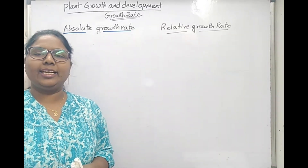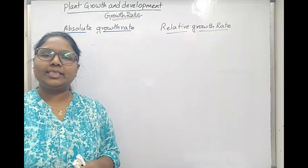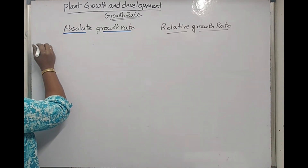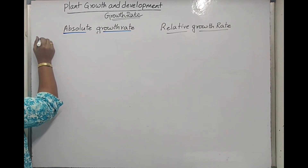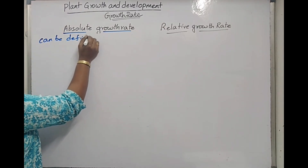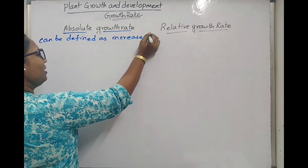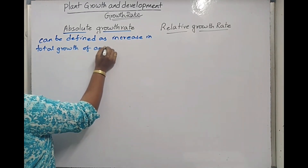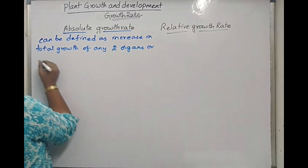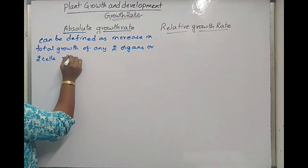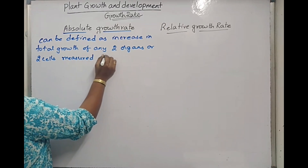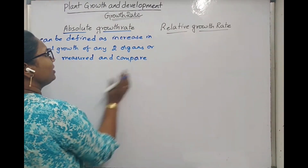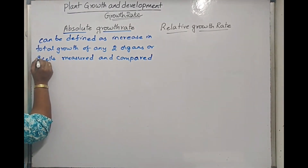Hello students. Now we will learn about absolute growth rate and relative growth rate. Absolute growth rate can be defined as increase in total growth of any two organs or two cells that are measured and compared per unit time. When we are comparing any two cells, we calculate in terms of absolute growth rate and compare per unit time.